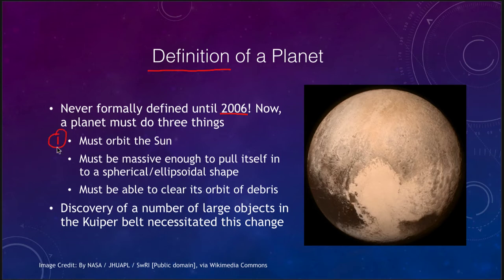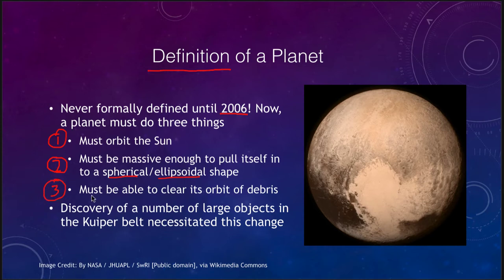First of all, it had to orbit the Sun — meaning that a large moon, even one larger than some planets, would not be considered a planet because it does not orbit the Sun. Second, it must be massive enough to reach equilibrium with gravity, meaning it pulls itself into a spherical or ellipsoidal shape.